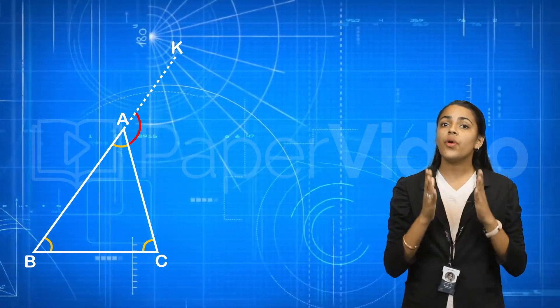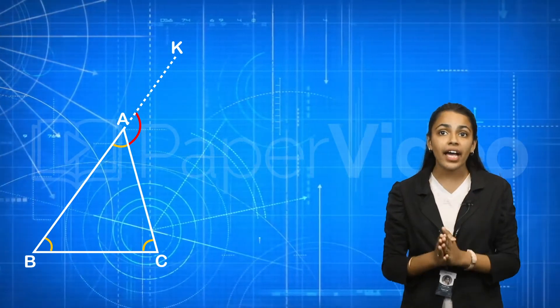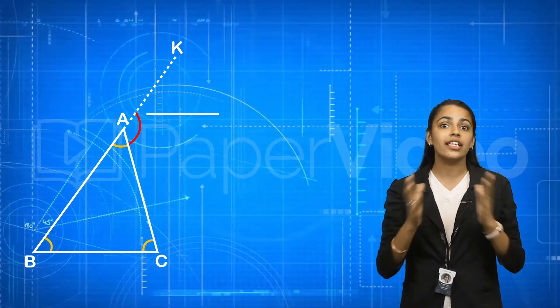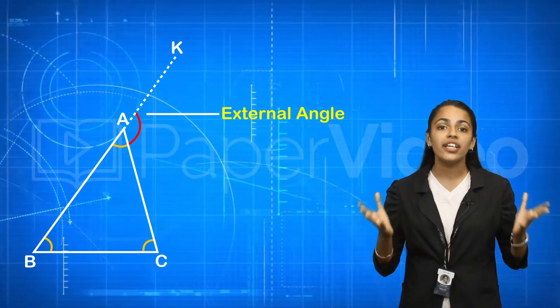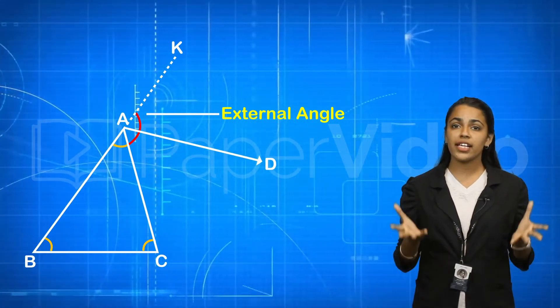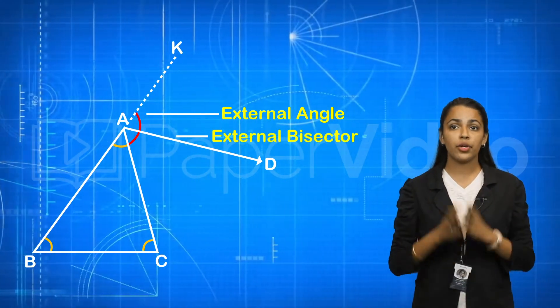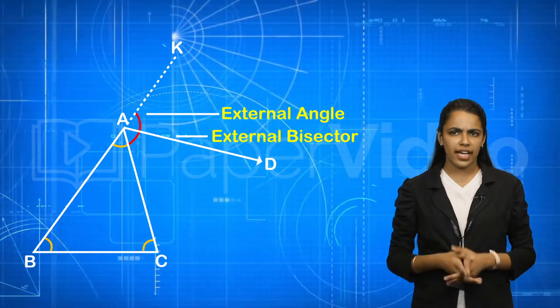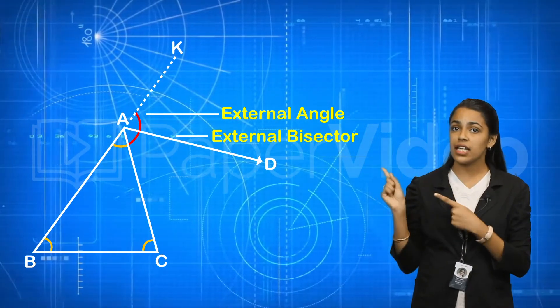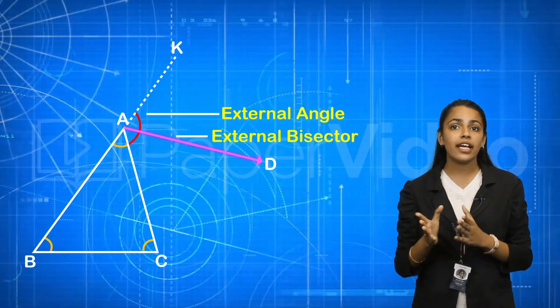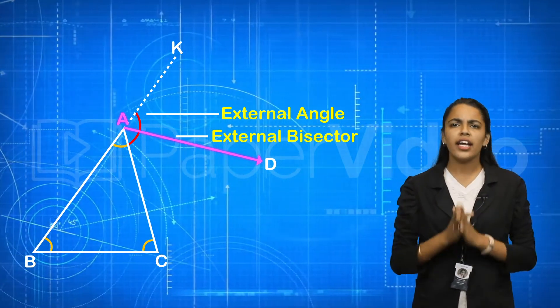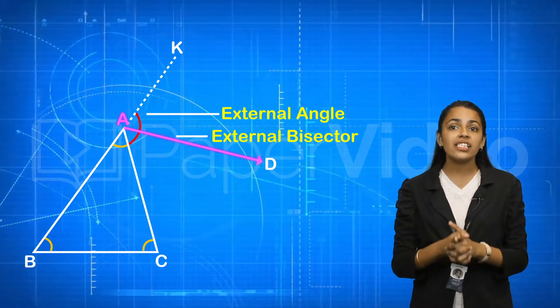As we know, the three angles inside a triangle are called internal angles of the triangle. An angle that is in the exterior of a triangle, making a linear pair with one of the internal angles of the triangle, is known as the external angle of the triangle. The bisector of the external angle is called the external bisector of an angle of the triangle. For instance, in triangle ABC, ray AD is the external bisector of angle A, so we can say that it is the bisector of exterior angle A.